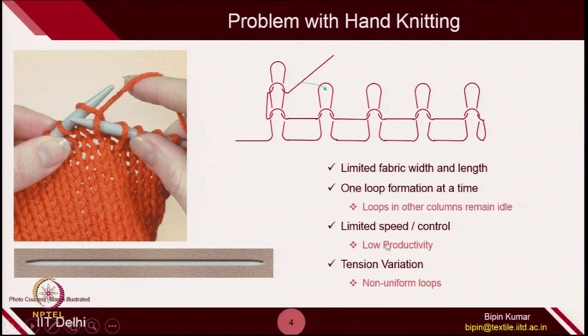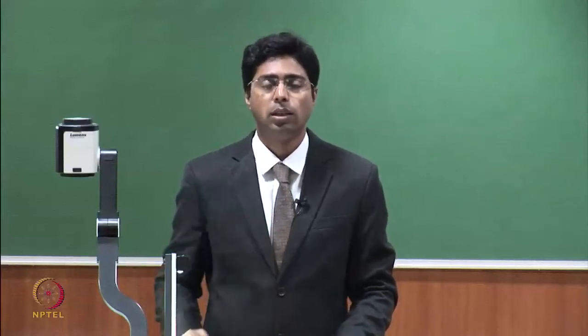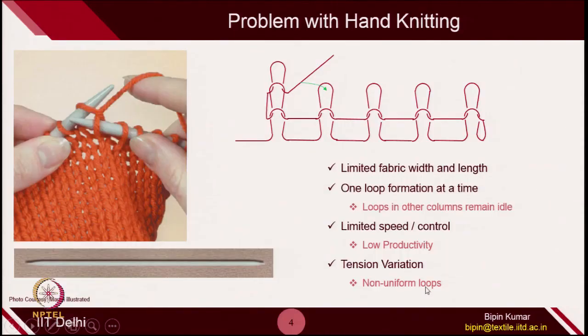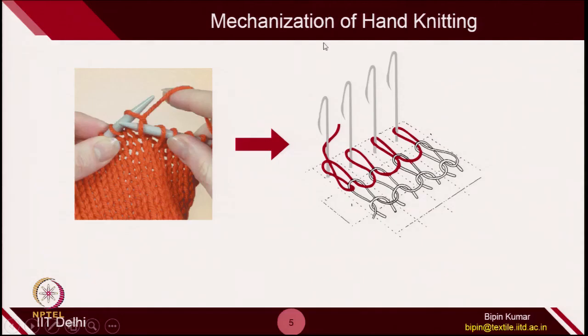Another big problem with hand knitting is tension variation. Since we are doing it by hand, if we do not give sufficient tension to the yarn, we can have different lengths of loops. If you do not pull the yarn properly, that loop length will become small; if you pull too much, the loop will become very big. There is a high chance of tension variation in the yarn during the fabric-making process, so the surface of the fabric could be disturbed. To overcome these challenges, there is a need for mechanization — automation.